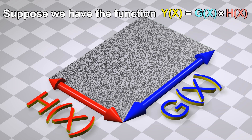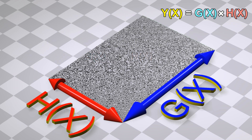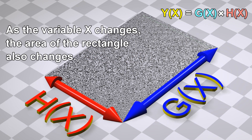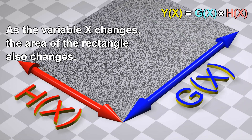Suppose we have the function y equals g multiplied by h. This function can be visualized as the area of a rectangle with sides of length g and h. As the variable x changes, the area of the rectangle also changes.